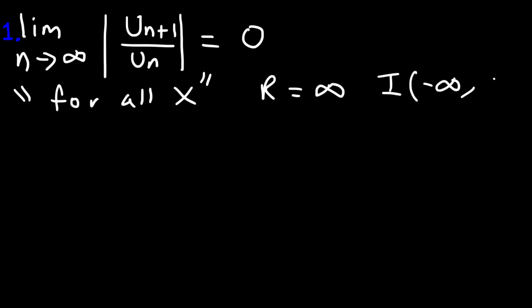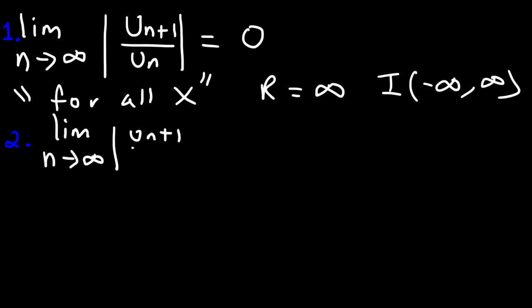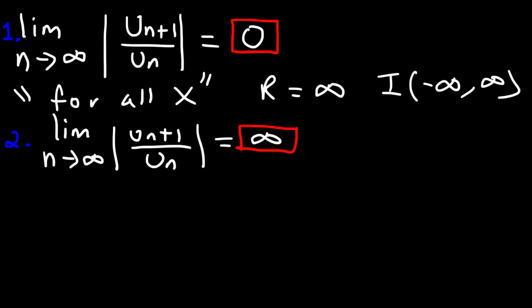And the interval of convergence is from negative infinity to infinity. So at any x value, the power series will converge. The second situation: after doing the ratio test, let's say you get infinity instead of 0. In order for a series to converge, the ratio test has to give an answer less than 1. So if it's greater than 1, or infinity, that means it diverges for all x values except one particular x value.